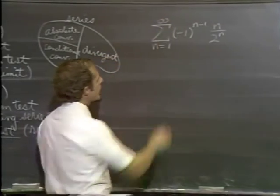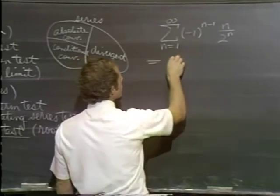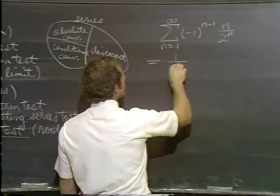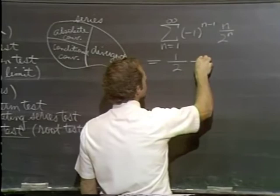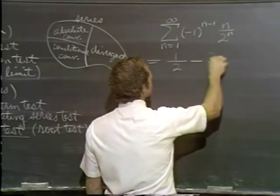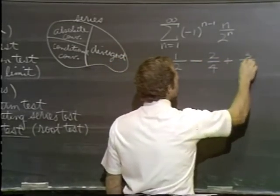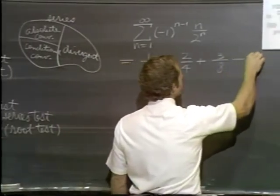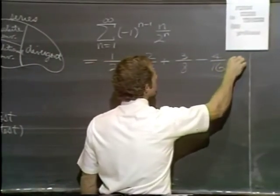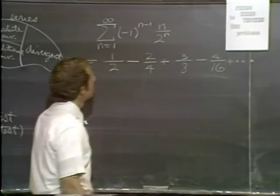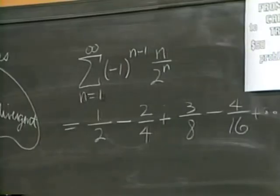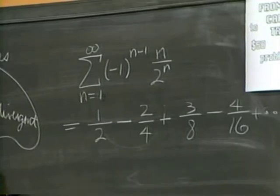So there's a series. Let's write out a few terms. It starts out with a plus sign, 1 over 2. Alternate signs, 2 over 4, 3 over 8, 4 over 16, etc.